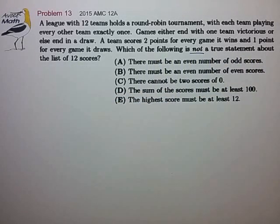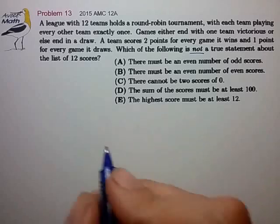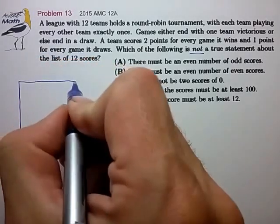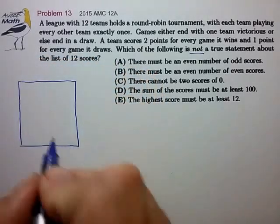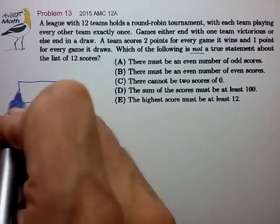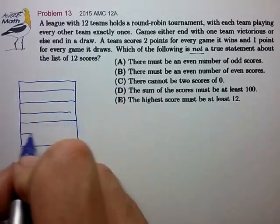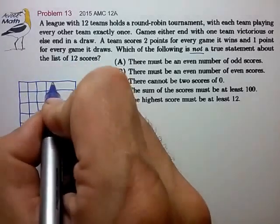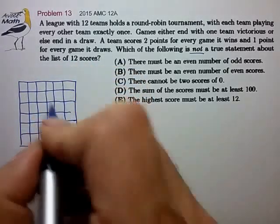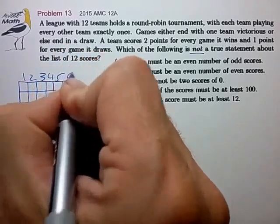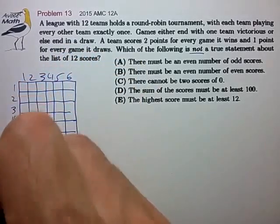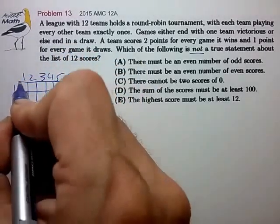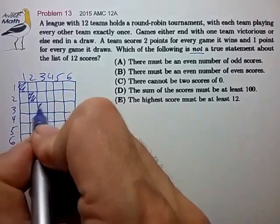This word problem is a little too complicated, so I like to come up with a simpler example to examine these statements. Let's consider a smaller tournament of six teams. Let's draw a table for how that would look. We have our six teams, and teams don't play each other, so let me block those out.